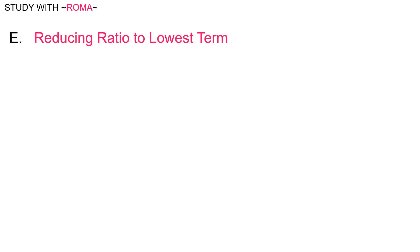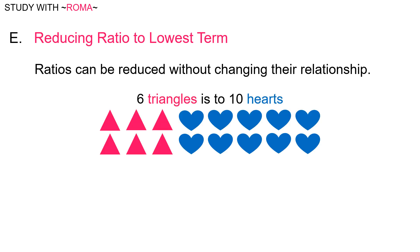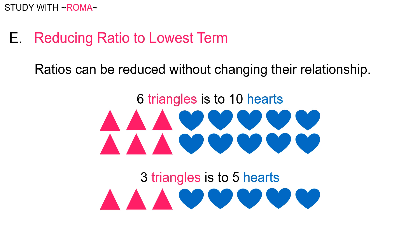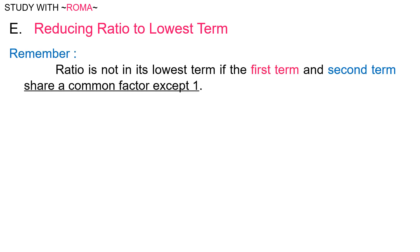For the last part, reducing ratio to lowest term. Ratios can be reduced without changing their relationship. For example, six triangles is to ten hearts can be reduced to three triangles is to five hearts. Remember, ratio is not in its lowest term if the first term and second term share a common factor except one.